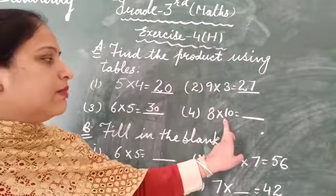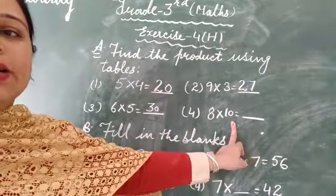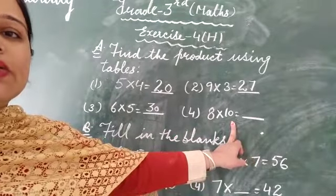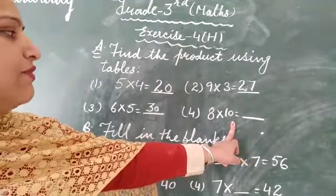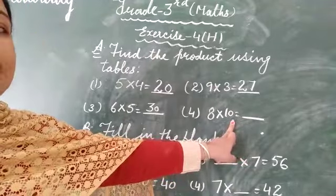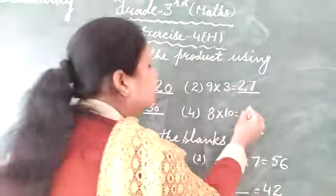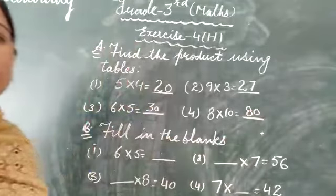Next fourth part, 8 multiply with 10. Start to read out table of 10. 10-1s are 10, 10-2s are 20, 10-3s are 30, 10-4s are 40, 10-5s are 50, 10-6s are 60, 10-7s are 70, 10-8s are 80. So 80 is your answer for this question.